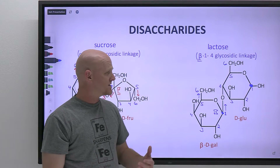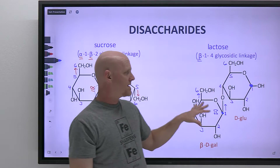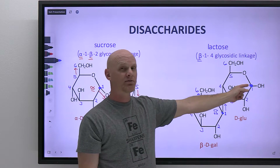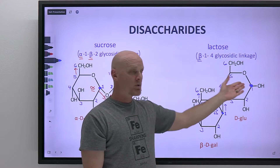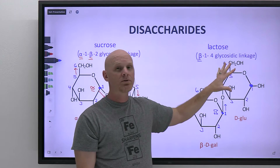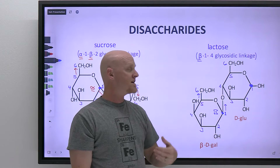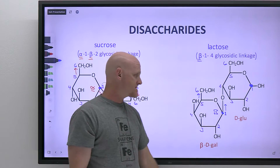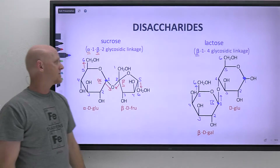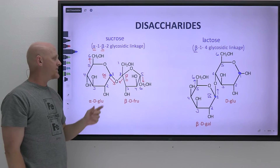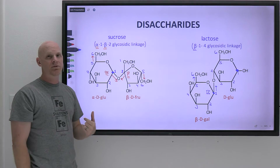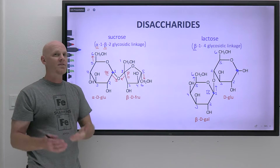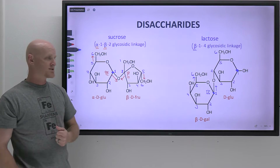One important thing to note: when one of the two anomeric carbons is free as a hemiacetal and not part of the glycoside, mutarotation is not only possible, but the disaccharide also functions as a reducing sugar — it would get oxidized by either Benedict's or Tollens' reagents. So lactose is a reducing sugar. Sucrose, however, is not — both anomeric carbons are tied up as a glycoside, so it will not act as a reducing sugar and is not oxidizable.